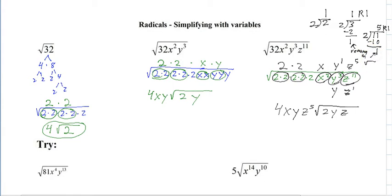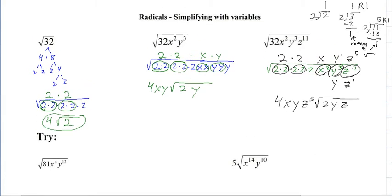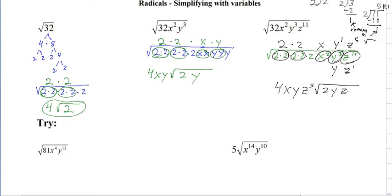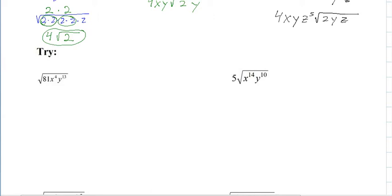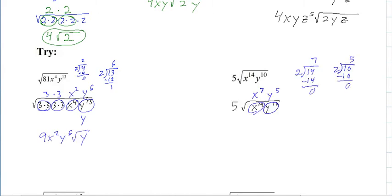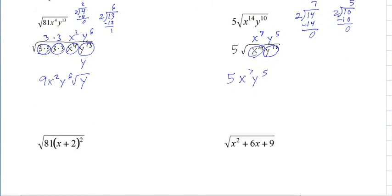So you can do either method — write them all out and keep circling, or you can divide your variables. Try those two right there. Hit pause and give them a shot. And there are the answers. I like the division method. The more you do it, eventually you'll just do it in your head: 4 divided by 2 is 2 — done. 13 divided by 2 is 6, and that means there's 1 left over.